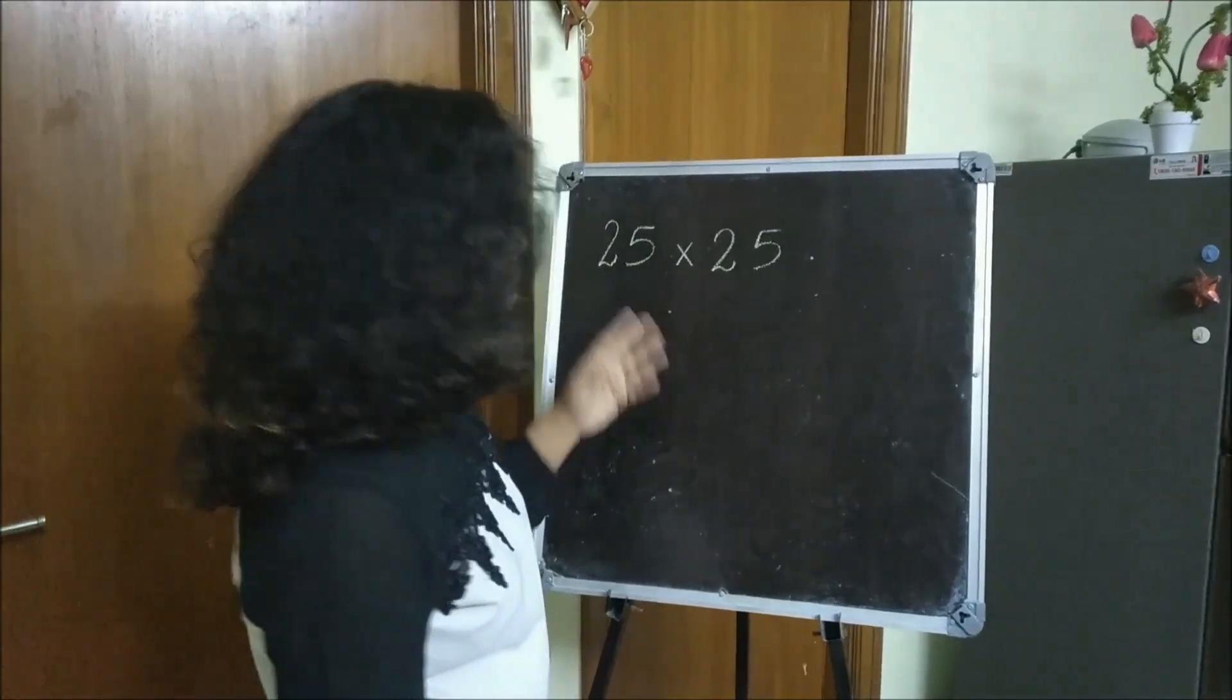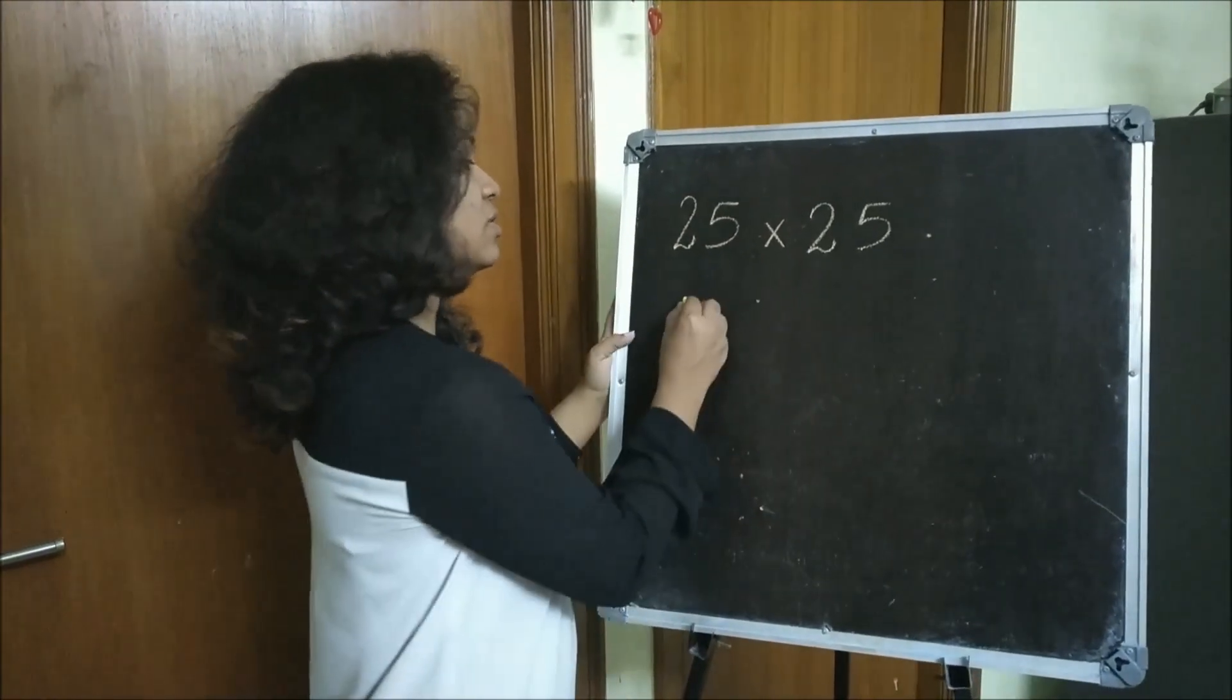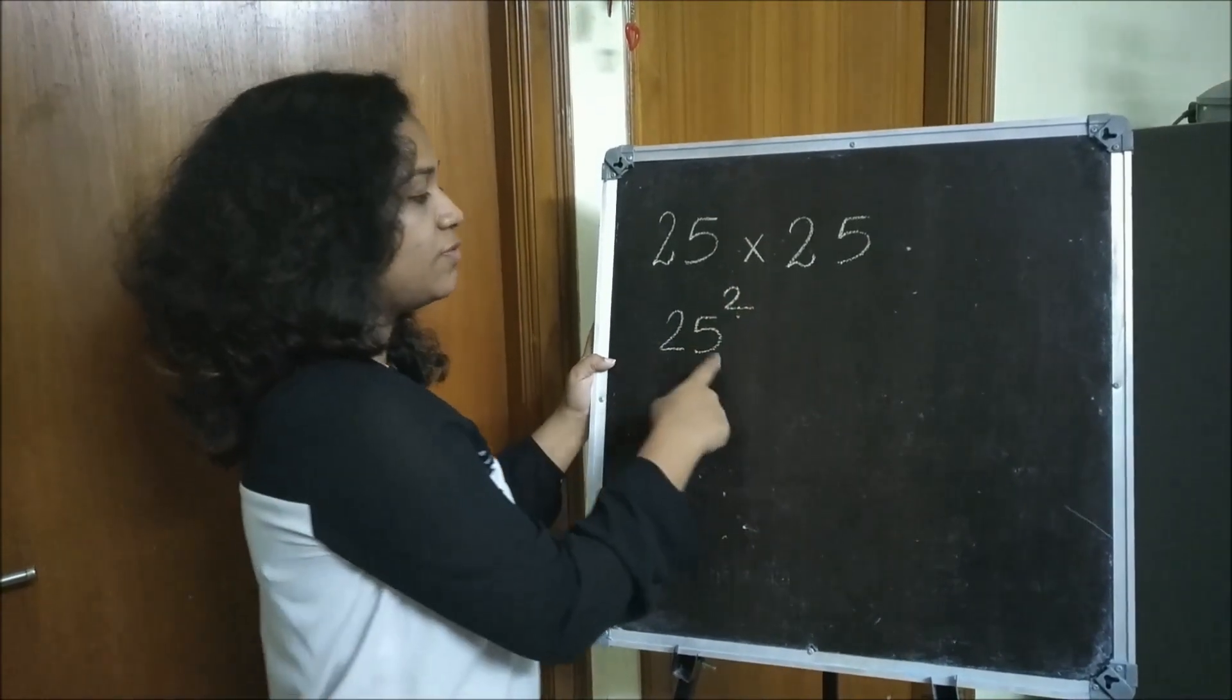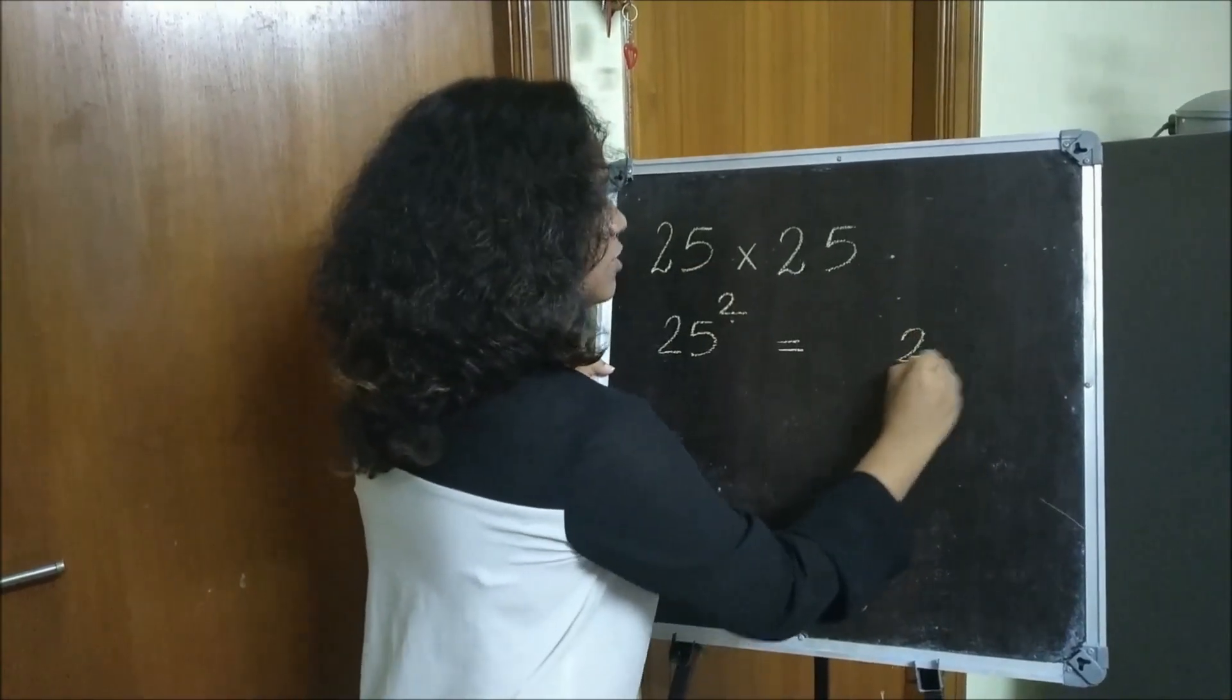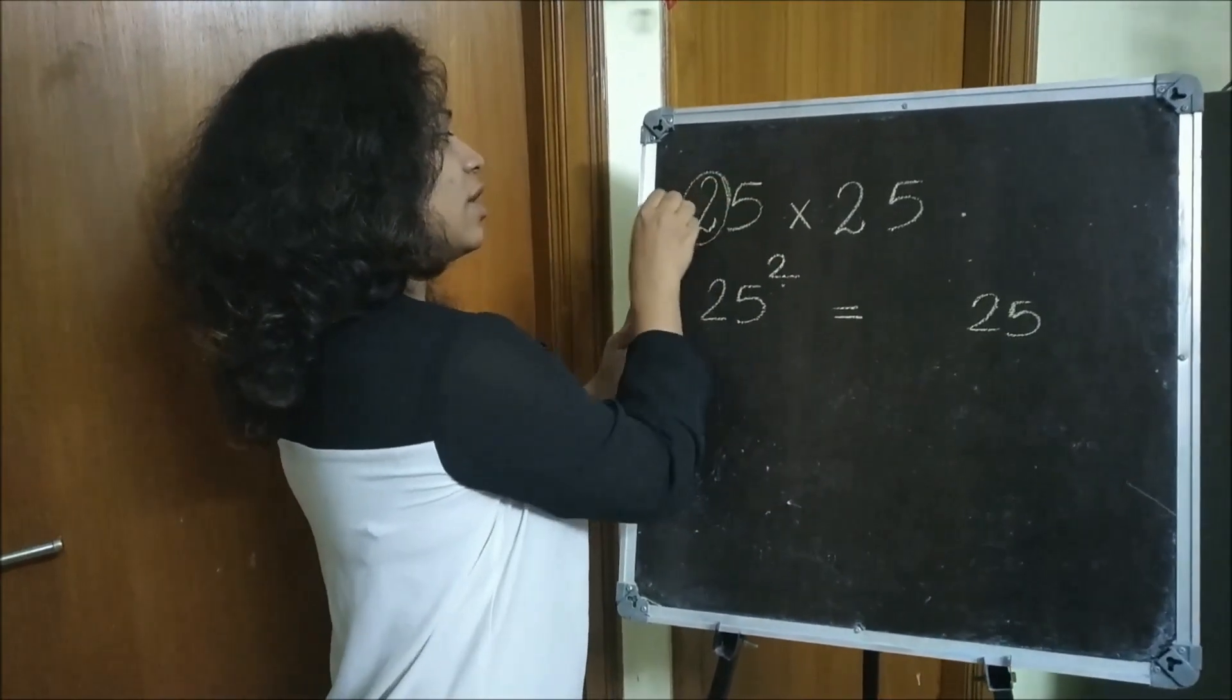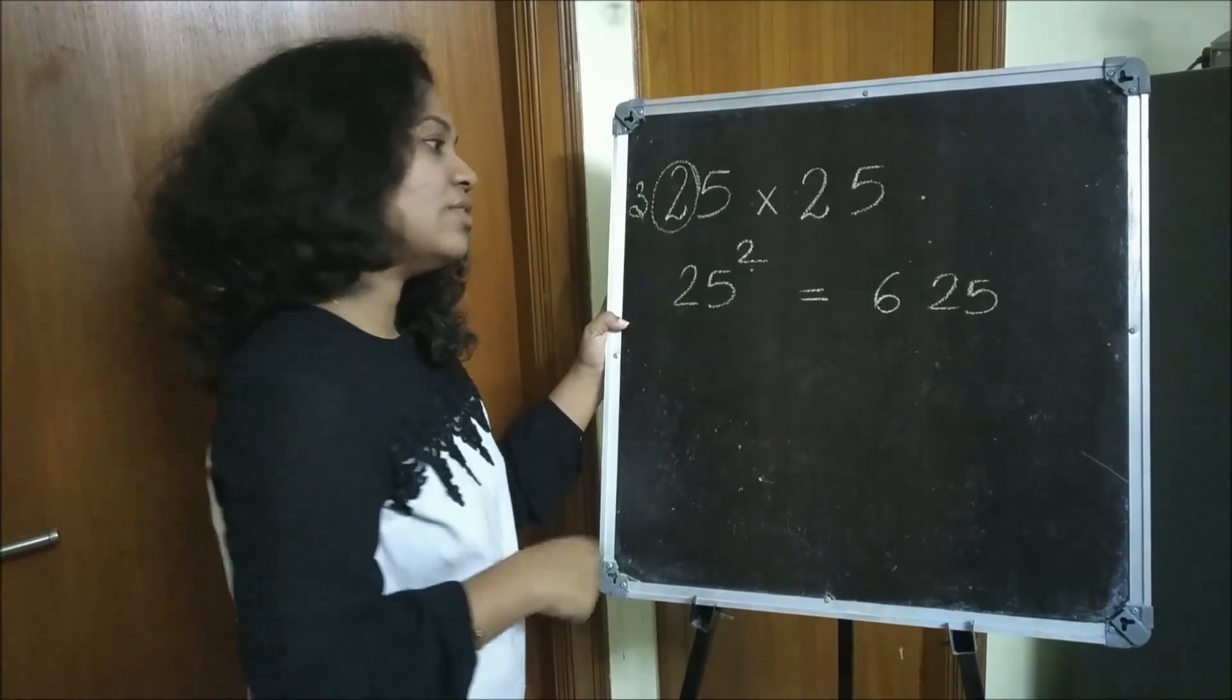Let's try to multiply 25 and 25. 25 into 25 can be written as 25 squared also. 25 squared will be equal to 5 fives are 25 and 2 threes are 6, so 25 squared is equal to 625.